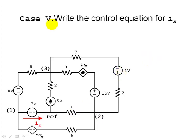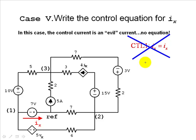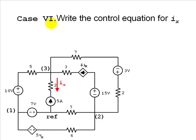Case 5: the controlling current happens to be an evil current. That means there is no equation needed to represent IX, because IX is not a new unknown — IX is an evil current. We do not need a control equation for IX in this case, because the control current IX is already an existing unknown in the evil branch equations.